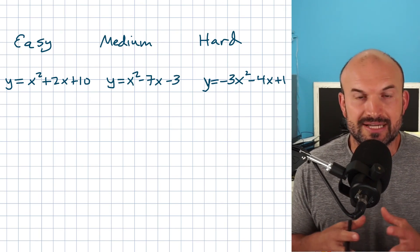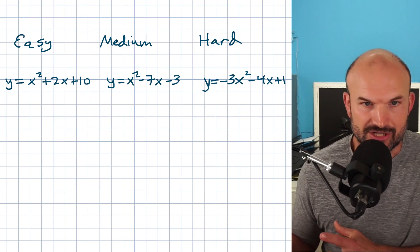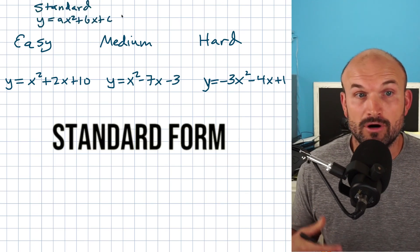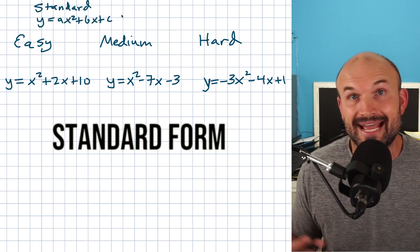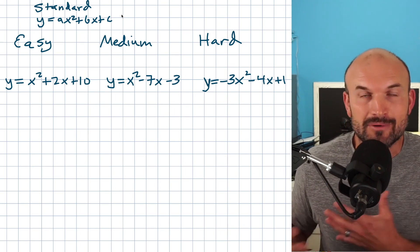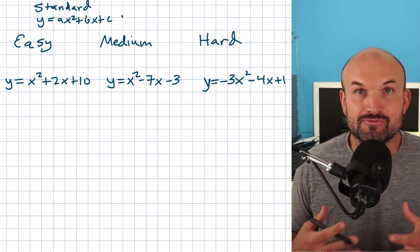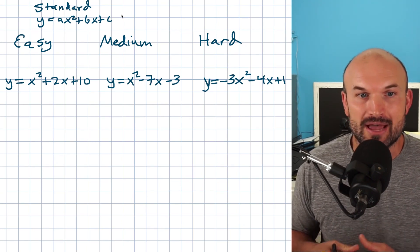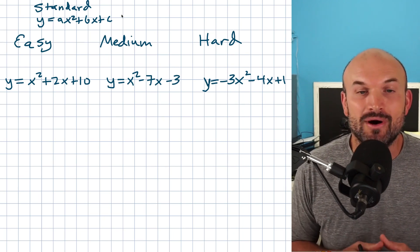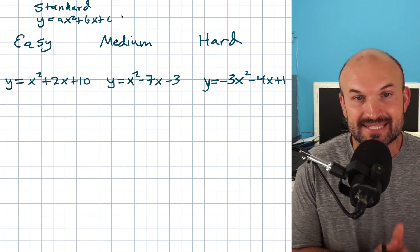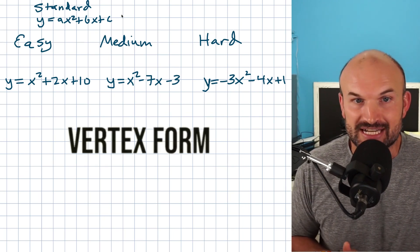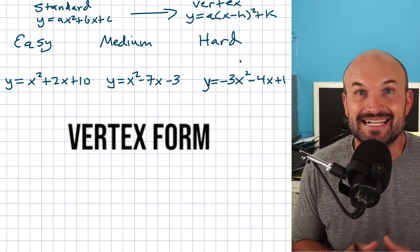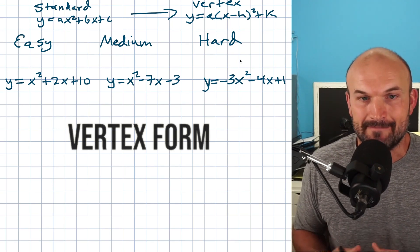Before we get started, I just want you to look at these three equations and recognize that these are all in what we call standard form — in the form of y equals ax squared plus c. Standard form is awesome, but sometimes rewriting it in different forms is going to be helpful. What completing the square helps us do is go from standard form into vertex form — the form of y equals a times x minus h, quantity squared, plus k.